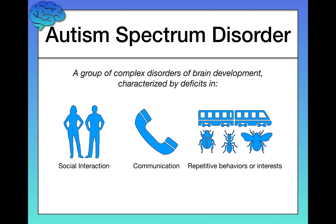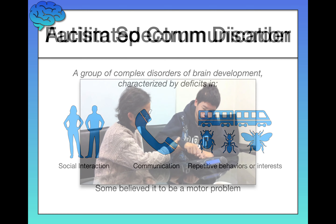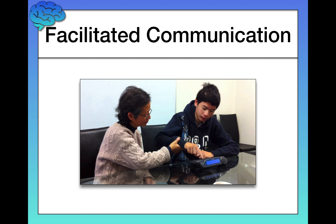Long ago, many people believed that autism spectrum disorder was purely a motor problem — not a cognitive one. The theory was that children with autism had a good brain but were trapped in a bad body. They wanted to communicate, for example, but just couldn't because of some physical limitation. Based on this theory, people developed a way to help children with autism called facilitated communication.